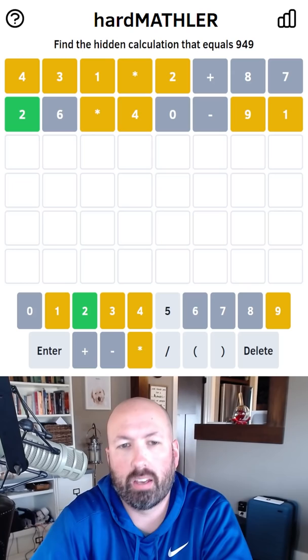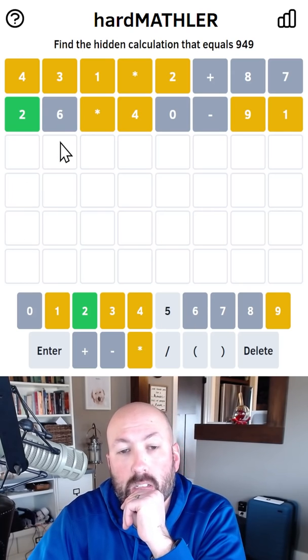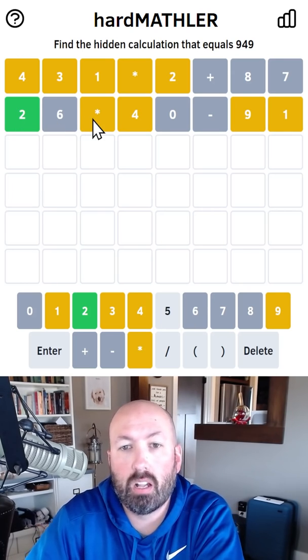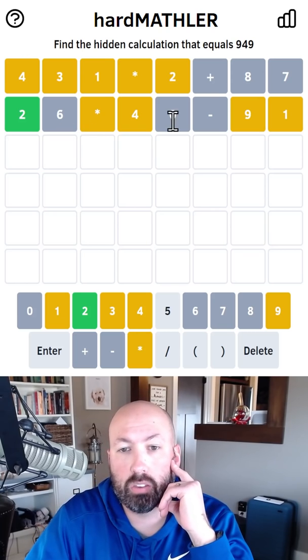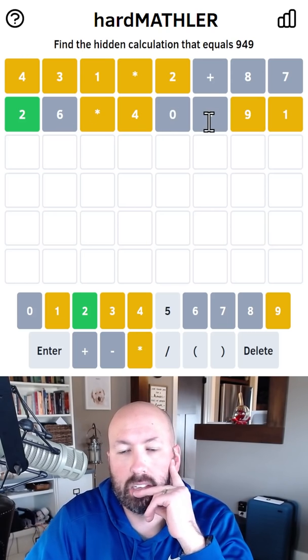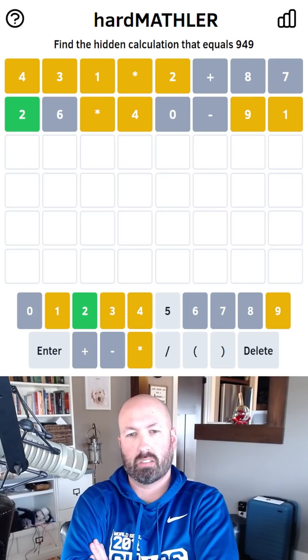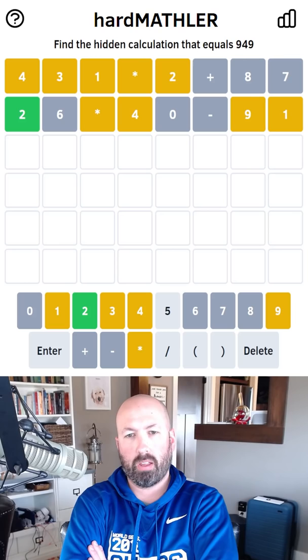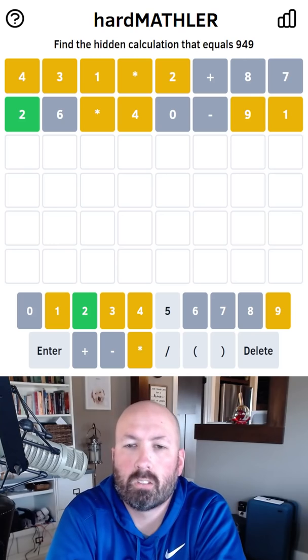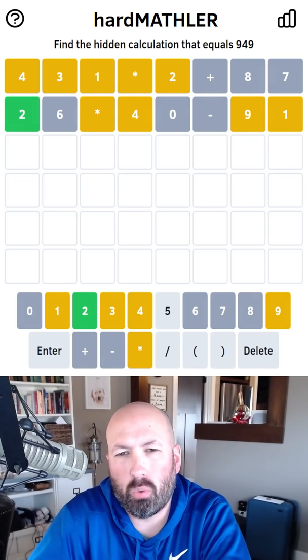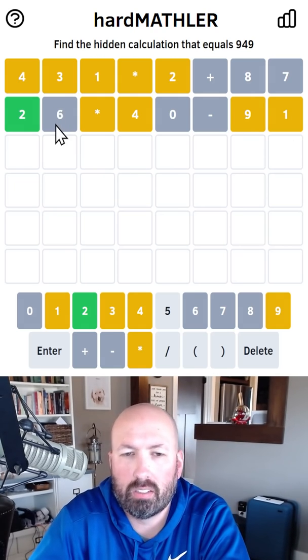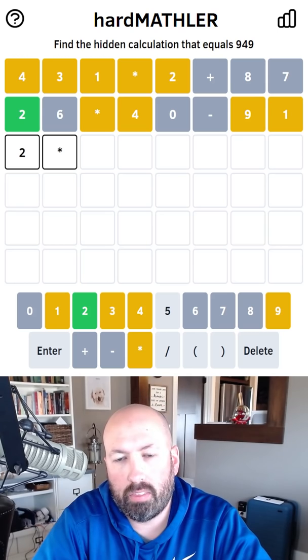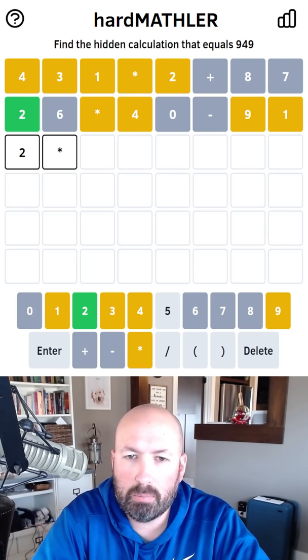Okay, okay, so oh maybe it's 2 times something. We could be doing 2 times a 3-digit number. Oh, we're not subtracting, interesting. So we've got to multiply and then divide maybe, or we could multiply twice, I guess. So it's got to be 2 times something and then divide it by something else.